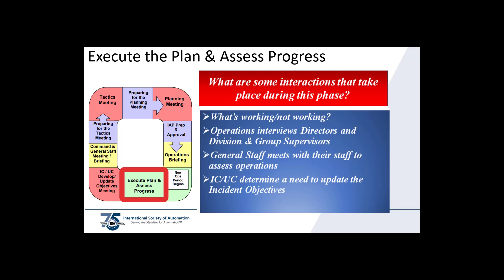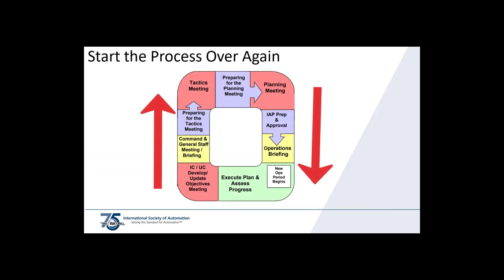But it doesn't end there. The planning P is an ongoing process requiring execution of the plan and then continually assessing it — what's working and what's not working. Operations interviews division and group supervisors for feedback. General staff meet with their respective staff to assess operations. With the help of the command and general staff, the IC or UC will determine if there is a need to update the incident objectives. And it starts all over again, keeping an eye on the next operational period.